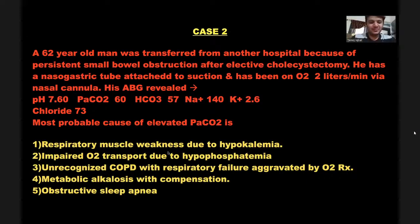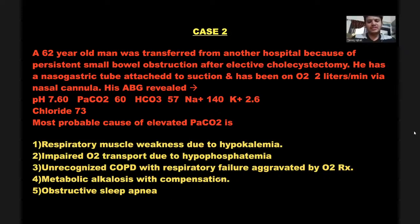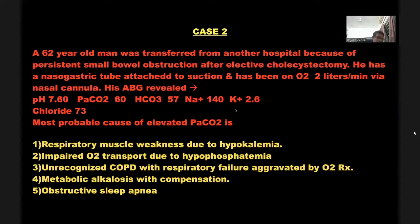The answer for Case 2 is metabolic alkalosis with compensation. Options that were considered include respiratory muscle weakness due to hypokalemia, impaired O2 transfer, unrecognized COPD, or obstructive sleep apnea — but the primary diagnosis is metabolic alkalosis with compensation. Some students mentioned unrecognized COPD, but most correctly identified compensated metabolic alkalosis.